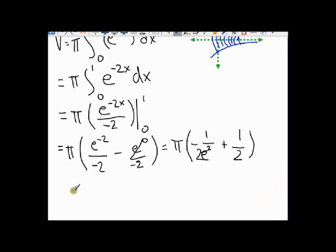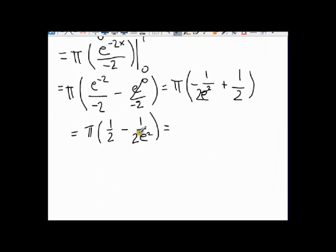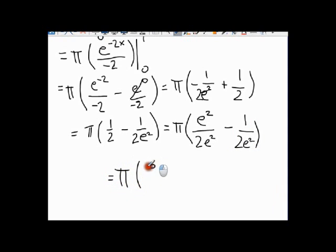Okay, so now what I want to do is I want to simplify this a little bit, so I'm just going to move the positive part to the front and the negative part to the back. So 1 half minus 1 over 2 e to the 2. And now I can get a common denominator. I've already got a 2 there, so I just need to multiply the top and the bottom here by e squared. So this will be e squared over 2 e squared minus 1 over 2 e squared. And now since I have a common denominator, I can say that that's equal to pi, and then e squared minus 1 over 2 e squared.